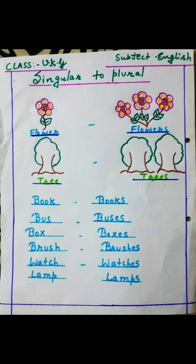Now we will learn how we make singular into plural. We add S to make it plural. But when our words end with S, X, SH, or CH, we add ES.